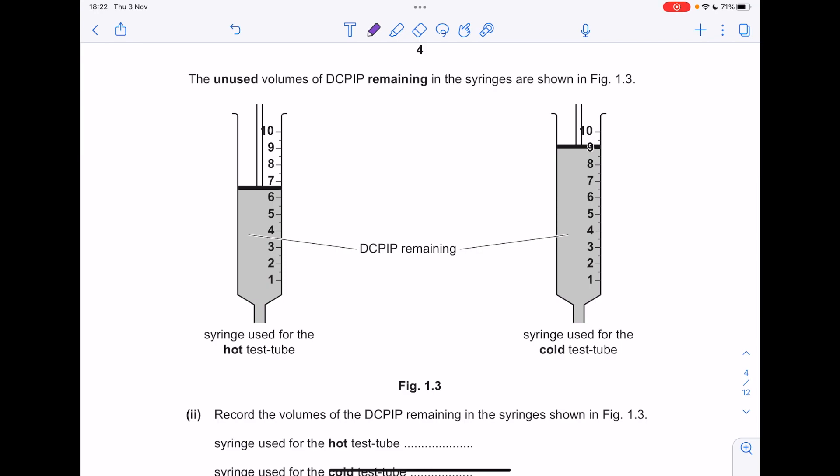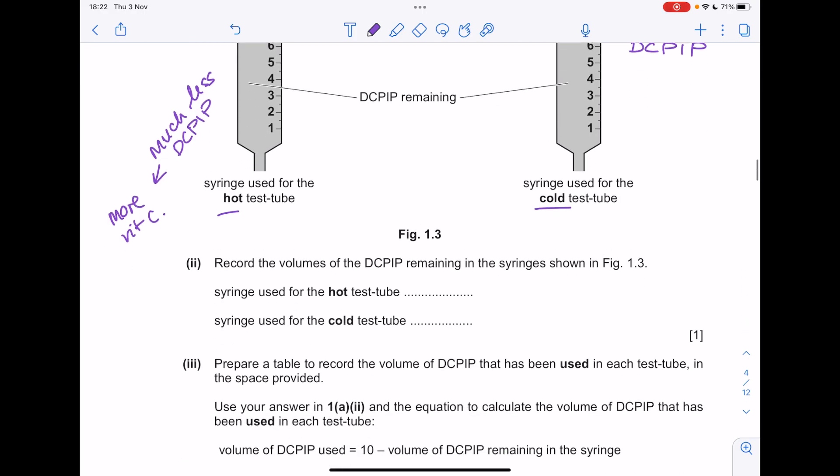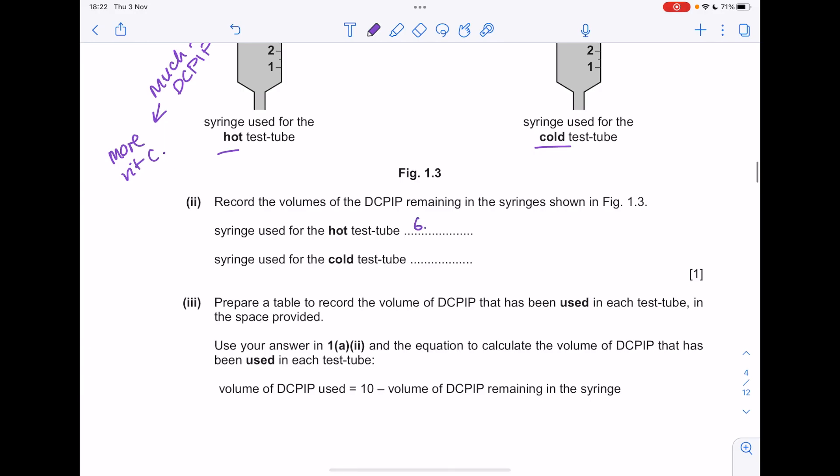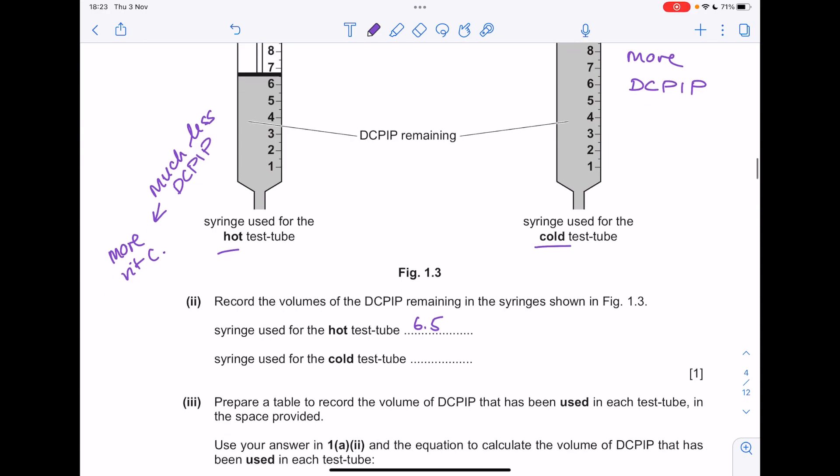The unused volumes of DCPIP remaining in the syringes are shown. Much less DCPIP remains, which probably means that we had more vitamin C here, because if there was more vitamin C it would need more DCPIP to decolorize. Record the volumes of DCPIP remaining in the syringes. That's 6.5. What about the cold one? That's more straightforward, that's 9.